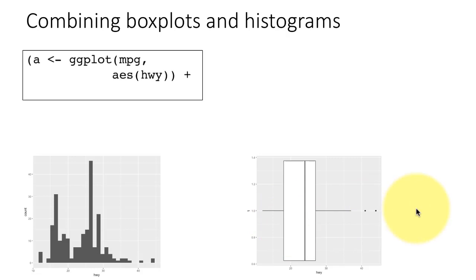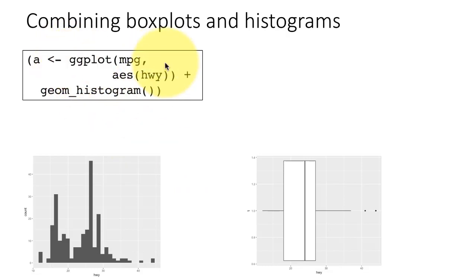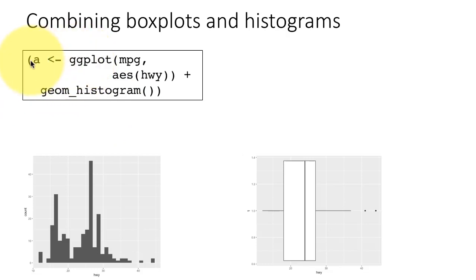This first plot generates a histogram using ggplot with the mpg dataset. For a histogram you need to map only the x aesthetic — you don't need to map the y aesthetic because the y is always a count in a histogram. We say geom_histogram. I'm assigning this to a variable called 'a' because we are going to be using it later when we put together histograms and box plots.